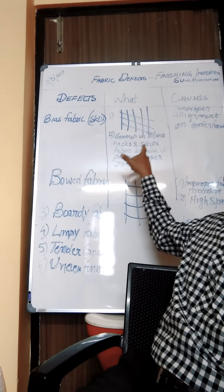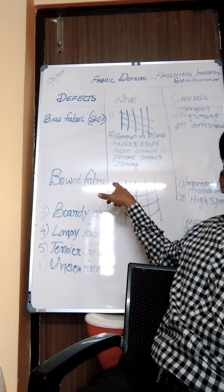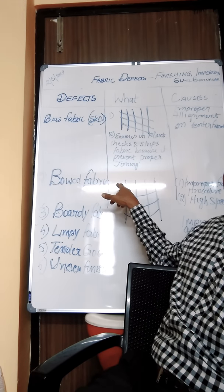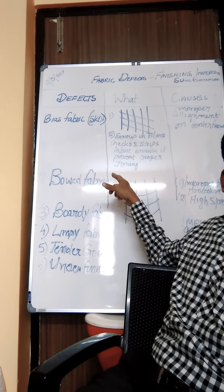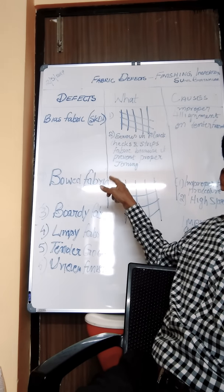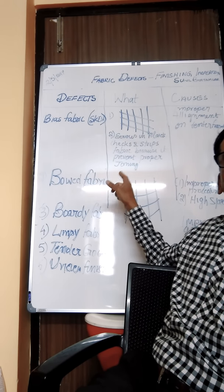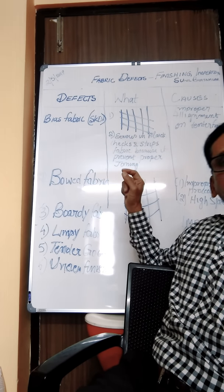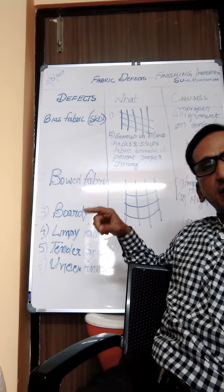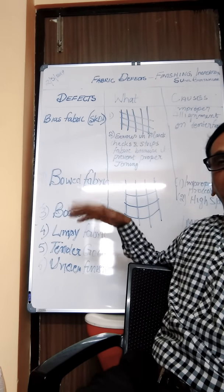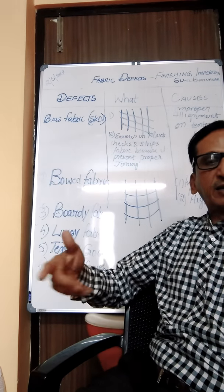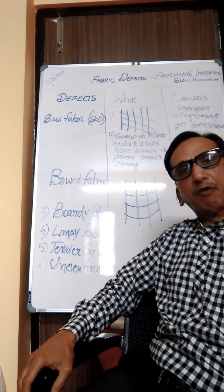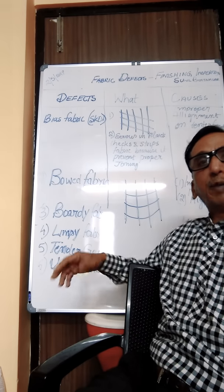Bowed fabric can also result from operating the tenter frame at very high speed. This defect is especially serious in plaids, checks, and stripes fabrics because it prevents proper joining of pattern parts in garment manufacture.